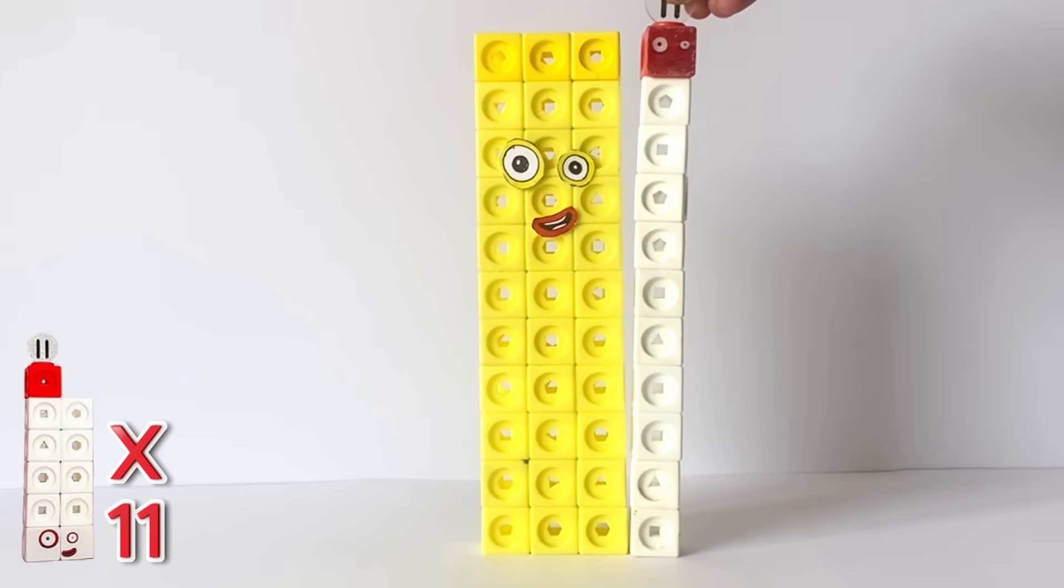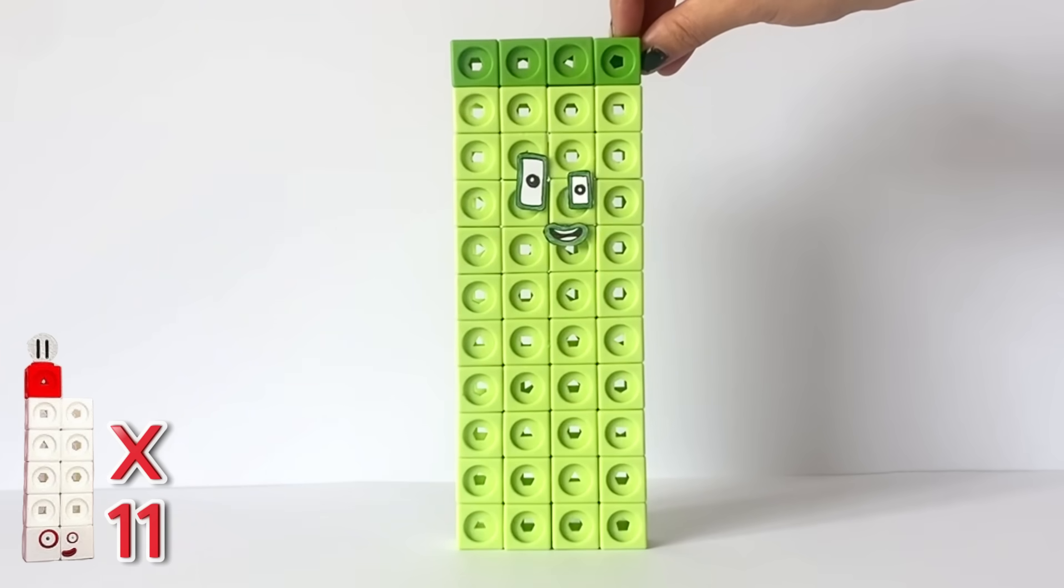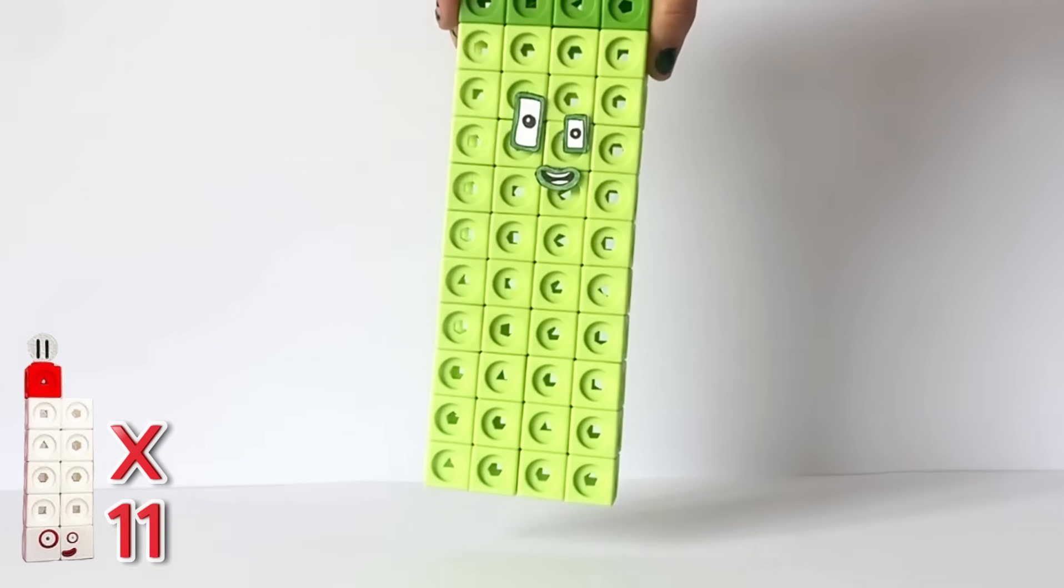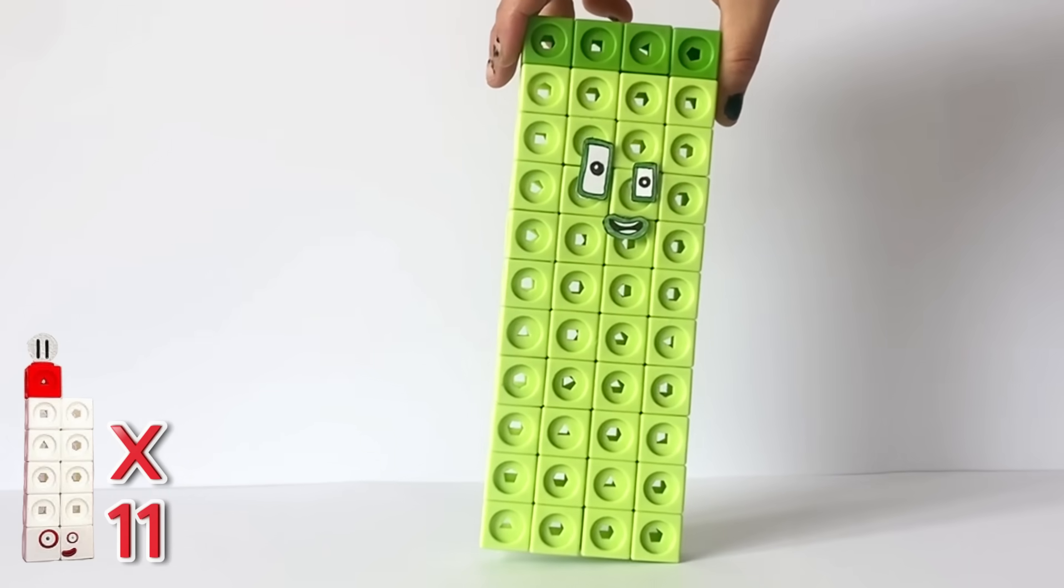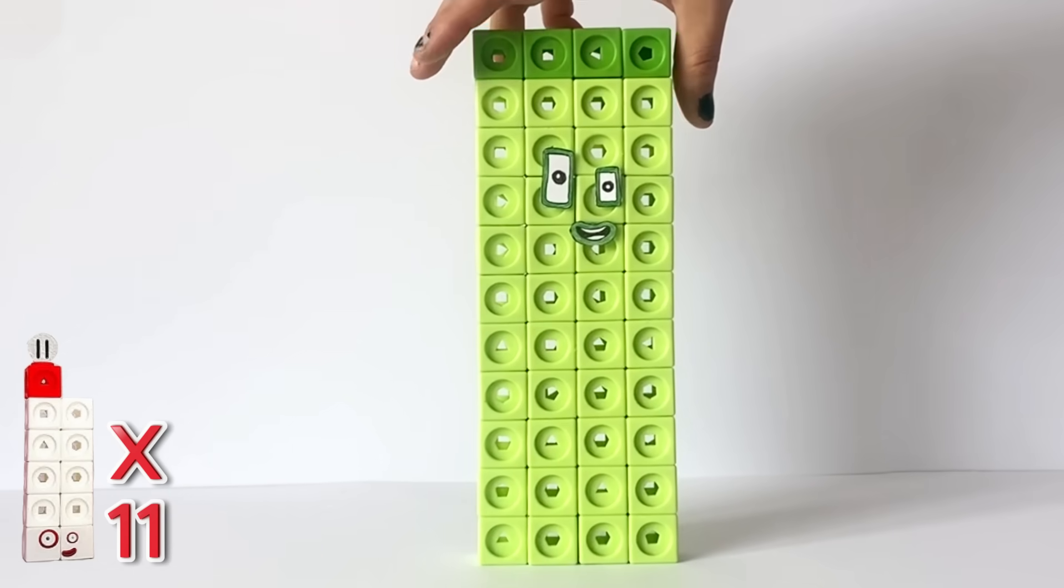Next, 4 times 11 equals 44. As you can see, the pattern is forming with the numbers: 11, 22, 33, and now 44. NumberBlock 44 also has one eye bigger than the other just like all of the other 11 times table members so far.